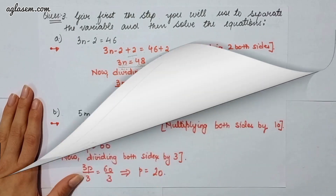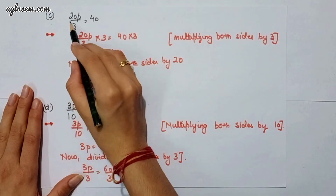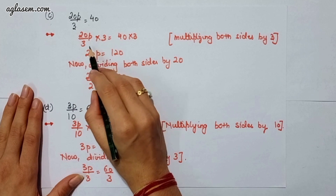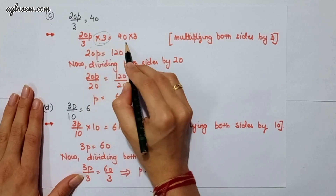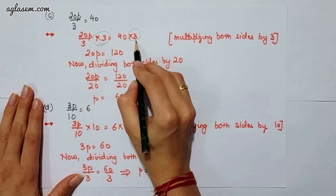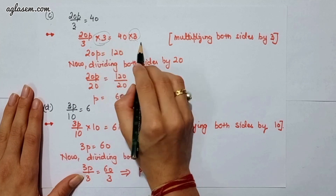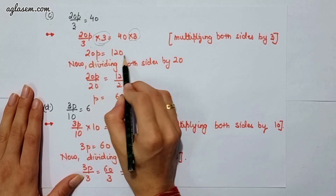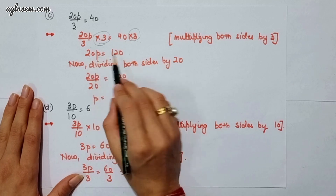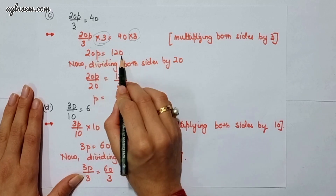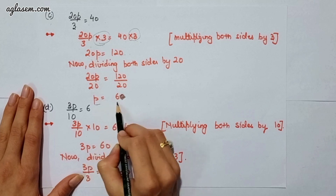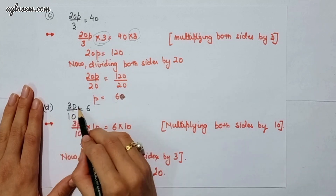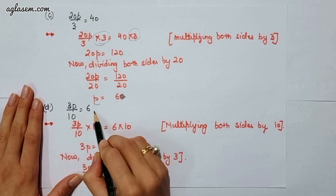Moving to the third part, which says 20p upon 3 is equal to 40. Here we multiply both sides by 3, so 20p is equal to 120. Now we divide both sides by 20, therefore p will be 6. The fourth part says 3p upon 10 is equal to 6. Here we multiply both sides by 10, so 3p is equal to 60.